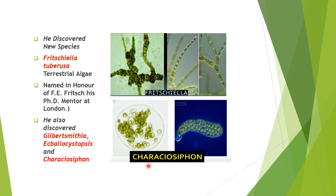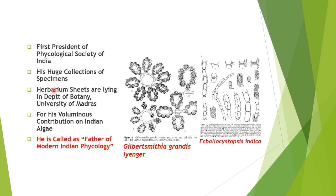Iyengar was also the first president of the Phycological Society of India, and his large collections of herbarium sheets are held in the Department of Botany, University of Madras. For his voluminous contributions on Indian algae, he is called the father of modern Indian phycology. New species discovered by him include Gilbertsmiathia grandis Iyengar and Ecbella cystopsis indica.